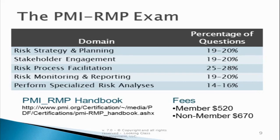The exam is broken into five specific domains. The first domain is risk strategy and planning, covering 19 to 20% of the questions. Another 19 to 20% covers stakeholder engagement. Another 25 to 28% covers risk process facilitation. The remaining portions cover risk monitoring and reporting and the performance of specialized risk analyses, at 19 to 20%.